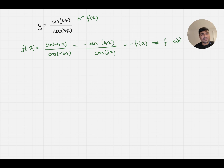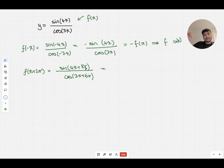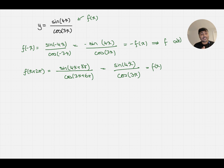I also notice that this graph will have some periodicity. What that period is isn't immediately obvious, but I can see that 2π will certainly be a period of the function, because f(x + 2π) = sin(4x + 8π)/cos(3x + 6π). Since sine and cosine have periods of 2π, sin(4x + 8π) = sin(4x) and cos(3x + 6π) = cos(3x), so f(x + 2π) = f(x). I don't know if this is the minimum period, but it is certainly a period, which means I only need to sketch this graph between 0 and 2π and then copy and paste it for all values of x.